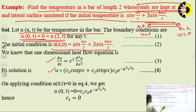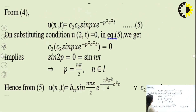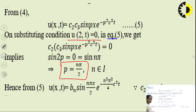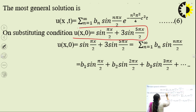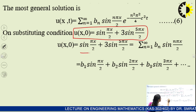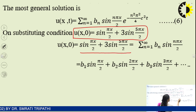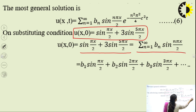The initial condition is u(x,0) = sin(πx/2) + 3sin(5πx/2). As we have already done similar problems, we know the heat equation and its solution form. On applying condition 1, we get c₁ = 0; on applying condition 2, we get p = nπ/2. The general solution becomes u = Σbₙ·sin(nπx/2)·e^(−n²π²c²t/4).